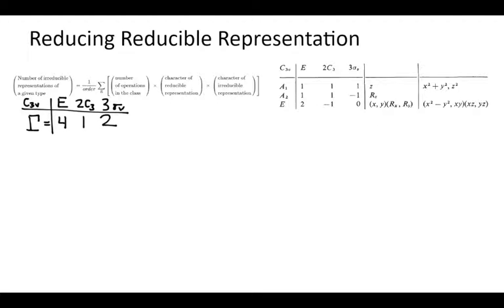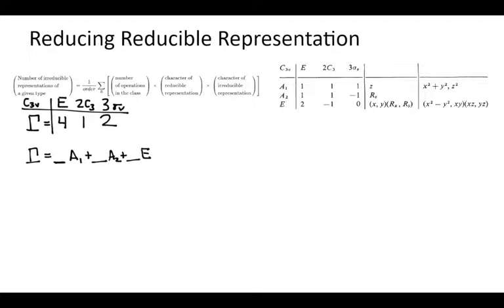So this is C3V. Say you came up with this reducible representation for your modes or whatever — however we came to this, it doesn't matter. We want to express this representation as a sum of some number of A1s, plus some number of A2s, plus some number of E representations. We're trying to find those coefficients using our reduction formula shown at the top.